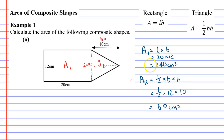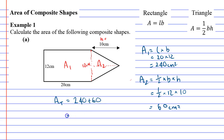Once you've found the area of your two shapes, I like to use A with a capital T, meaning the total area, and then I just add them together. 240 plus 60 is 300 centimeters squared.